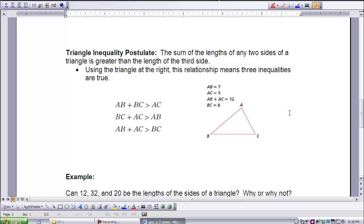So using the triangle at the right, this relationship means that we have three inequalities to be true. So if AB here is 7 and AC is 5, these two sides together are 12. So BC, can BC be 8?